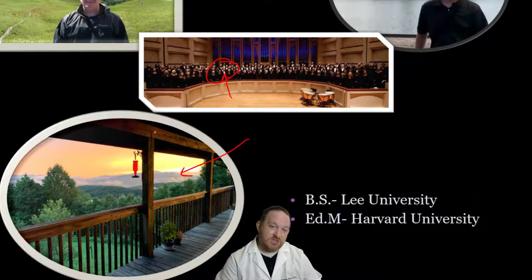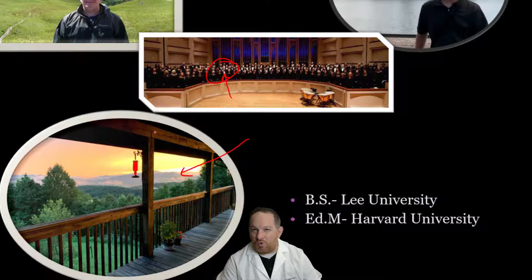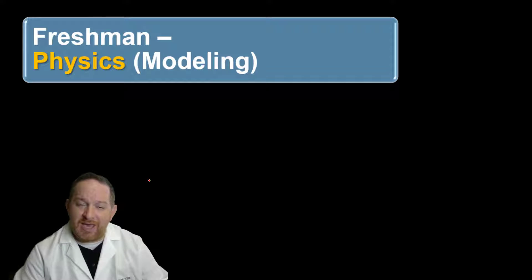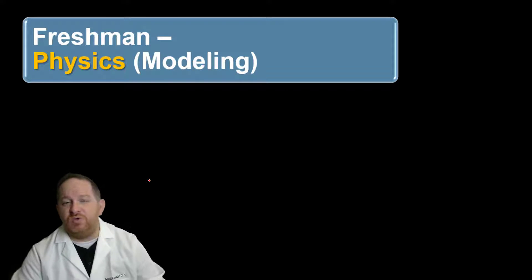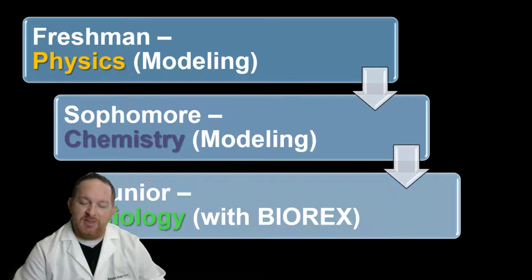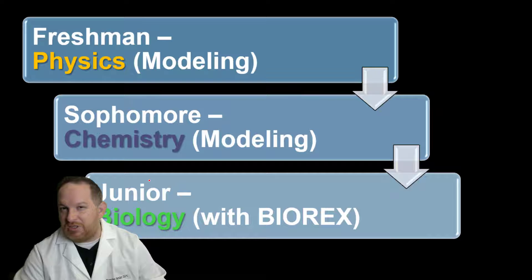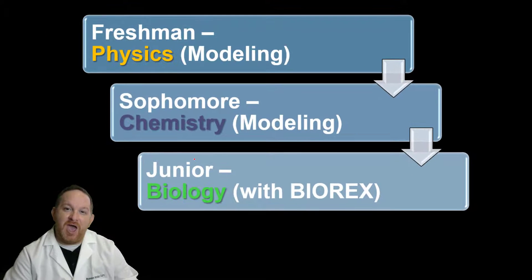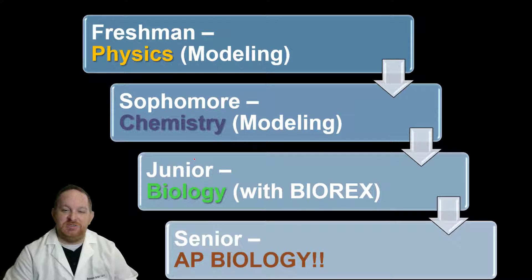So I want to talk to you now a little bit about what the course will be like, what the course entails. Here at Canon, if you remember your journey, we start with freshman physics, go to chemistry modeling, and then as junior we have biology experience with BIOREX. You've made the very wise decision to take AP Biology as a senior.